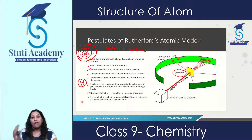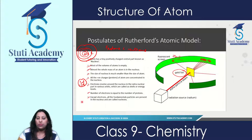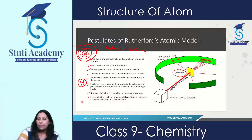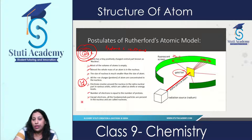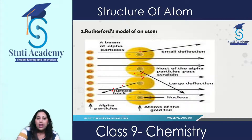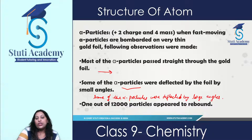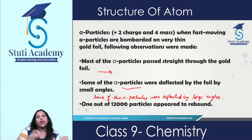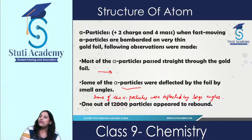When the question comes 'write down the postulates of Rutherford's atomic model,' you need to write all these points. If the question is 'explain Rutherford's model of an atom,' you have to draw the diagram and then write all the observations and conclusions. Sometimes the question can ask only for observations, or only for conclusions — so it depends on what kind of question comes in the exam. You have to answer accordingly.